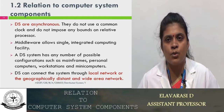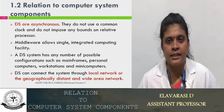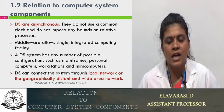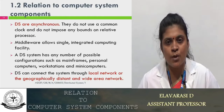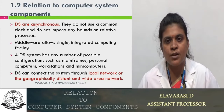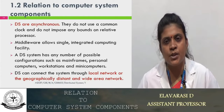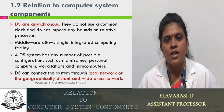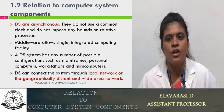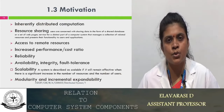The middleware allows a single integrated computing facility. A distributed system has many possible configurations able to support mainframes, personal computers, workstations, and mini computers. The distributed system processor may be either a mainframe, personal computer, workstation, or mini-frame computer, and it is connected over a local LAN or WAN if geographically distributed.